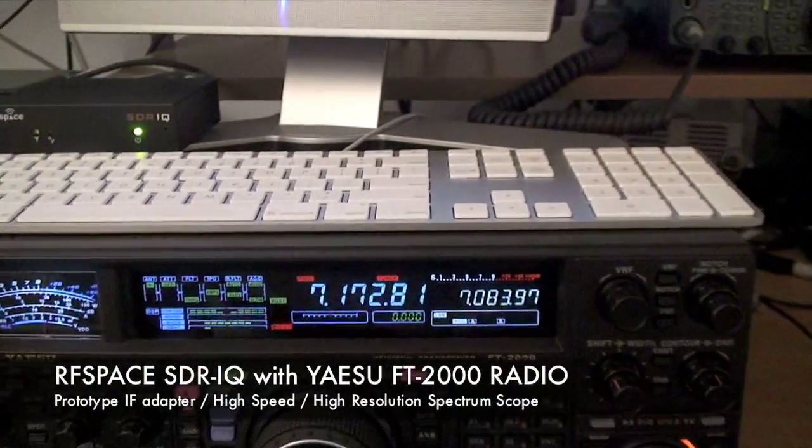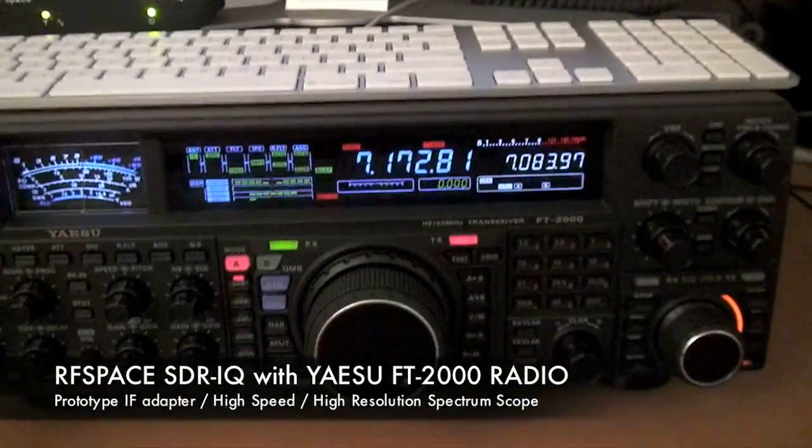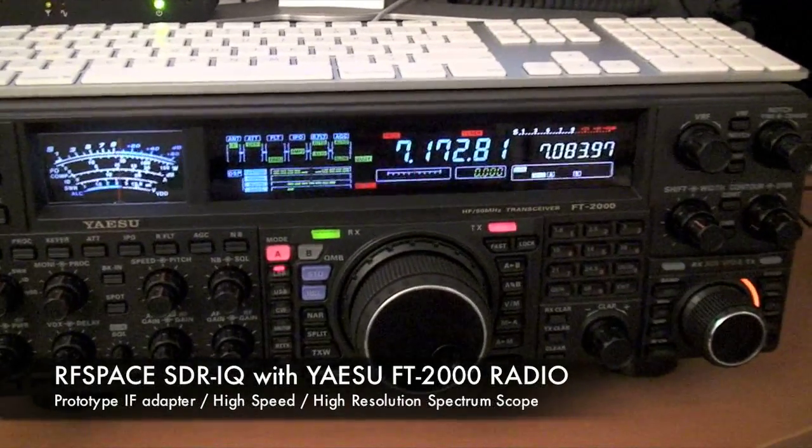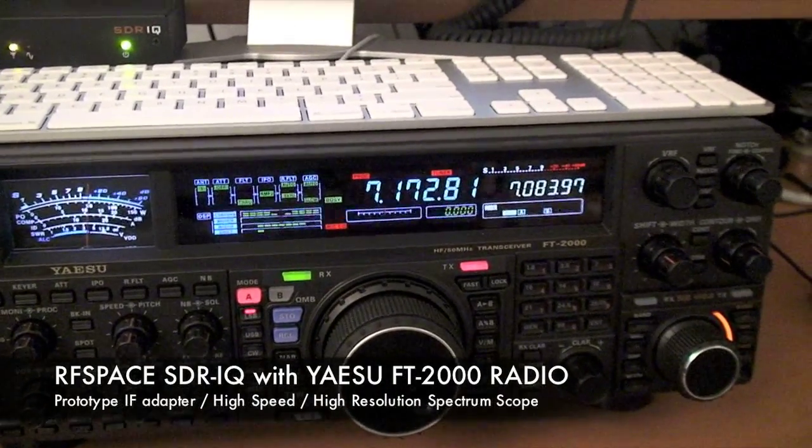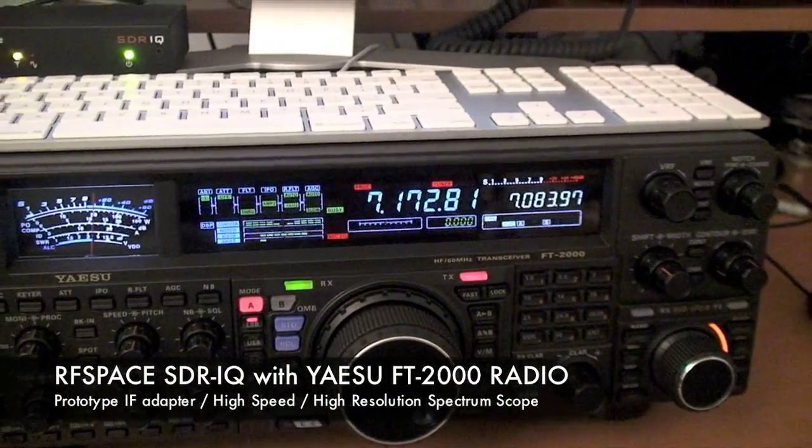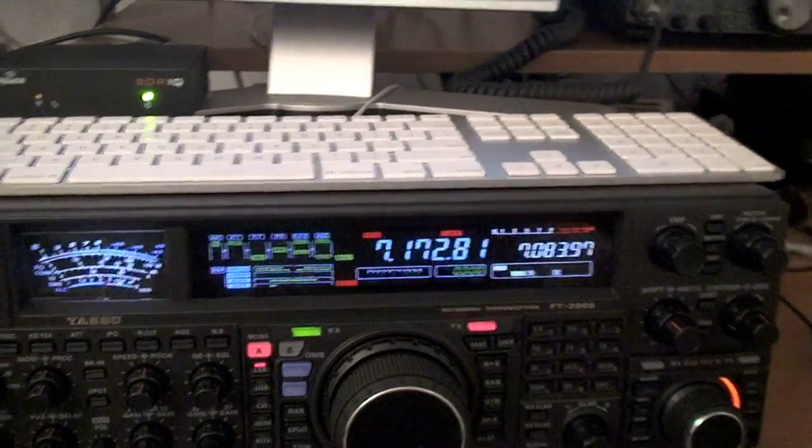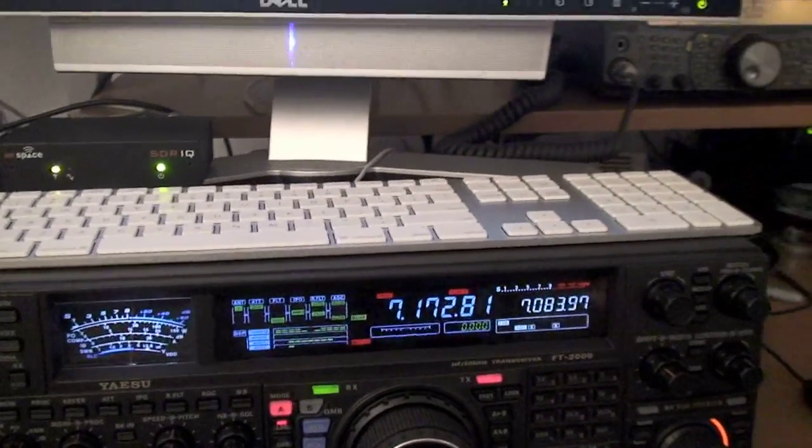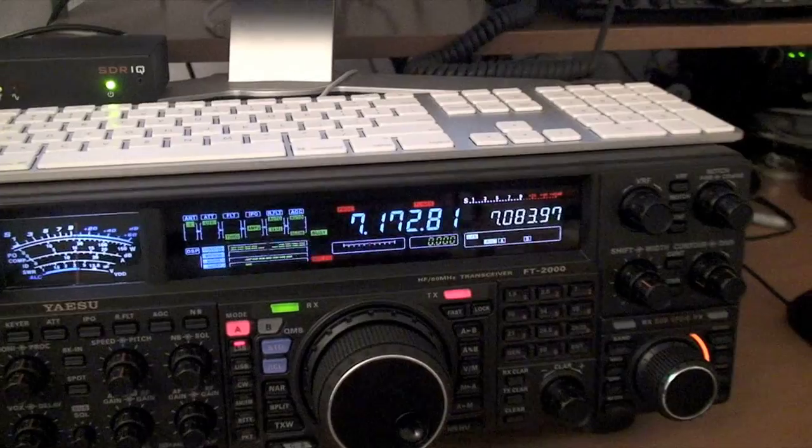Today we are testing a prototype of a Yaesu FT2000 radio that has been fitted with an RF space IF board. This board plugs in exactly where the DMU2000 board plugs in, inside the FT2000.